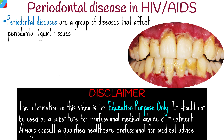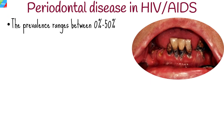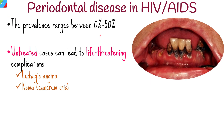Periodontal diseases are a group of diseases that affect periodontal tissues, or the gum. The prevalence ranges between 0% and 50%. If left untreated, HIV-associated periodontal disease can lead to potentially life-threatening complications such as Ludwig's angina and Noma, also known as cancrum oris.